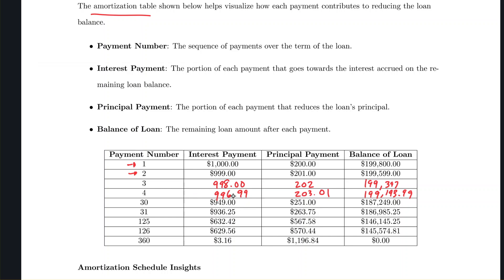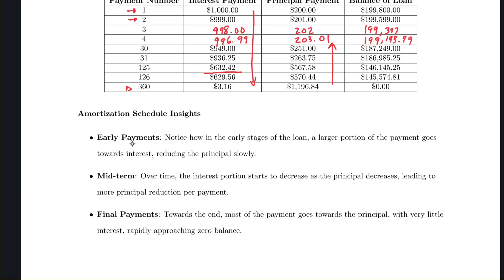Reading further in the table: around payment 125 (about a third of the way through), roughly $600 of the $1,200 goes to interest and about $560 to principal. At the final monthly payment (360), only about $3 goes to interest and about $1,196 goes to principal. Over time, the amount going to interest decreases while the amount going to principal increases.